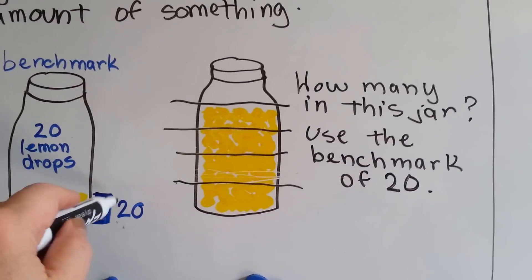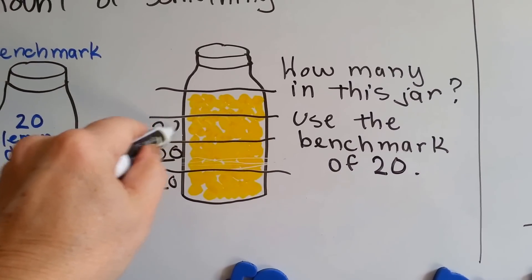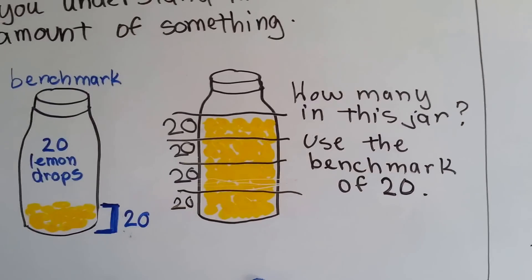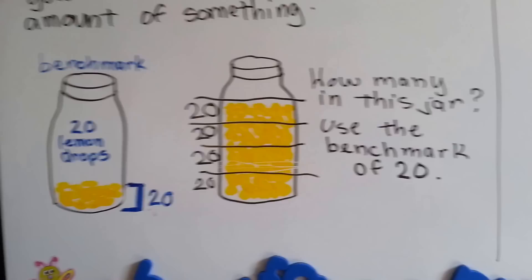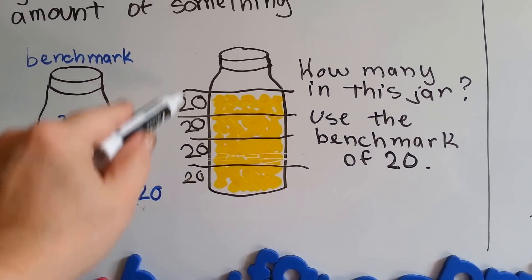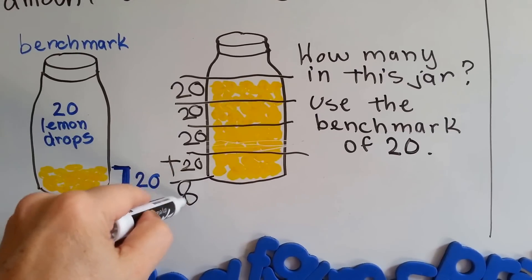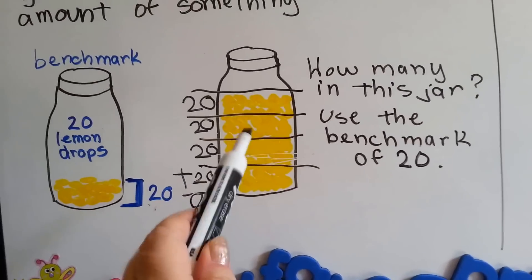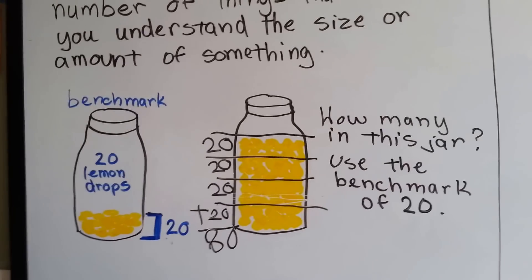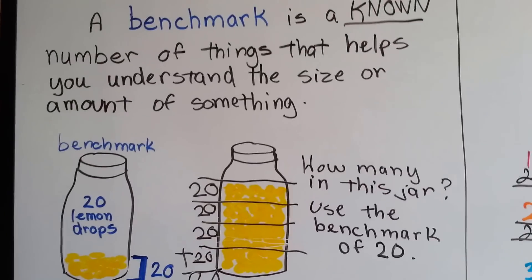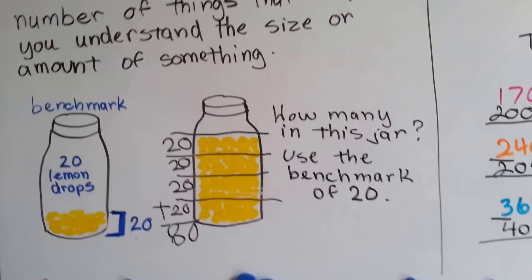So guess how many are probably in here. If this bit right here is 20, you can use it as a benchmark to figure out how many lemon drops are in the other jar. There are about 4 of these — 2, 4, 6, 8 — bring down the zeros — there are about 80 lemon drops in that jar. And that's because we used the benchmark. A benchmark is anything that will help you estimate how much is in something else.